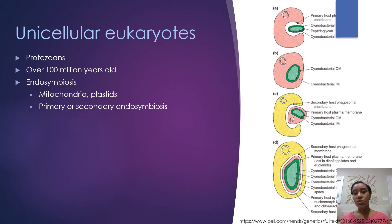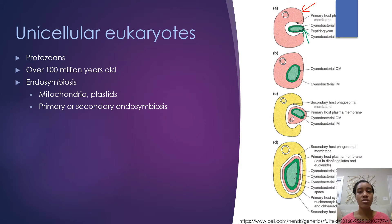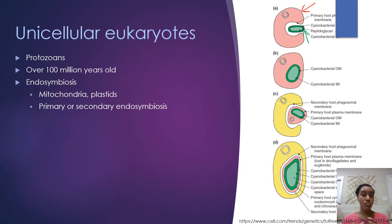Generally, when you think about one cell engulfing another cell, it's for nutrients — the larger cell engulfs a smaller cell, digests it, and eats it. But in this case, our larger cell will engulf a smaller cell — in this case, a cyanobacteria — and instead of digesting it, that cyanobacteria became a part of the host cell. It just resided in the cytoplasm, forming a symbiotic relationship between the larger cell and the cyanobacteria.